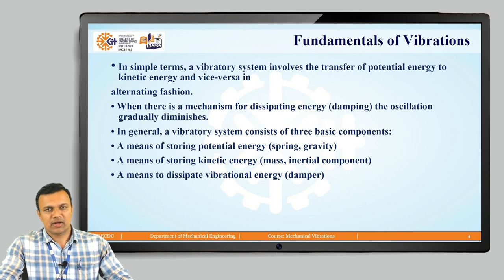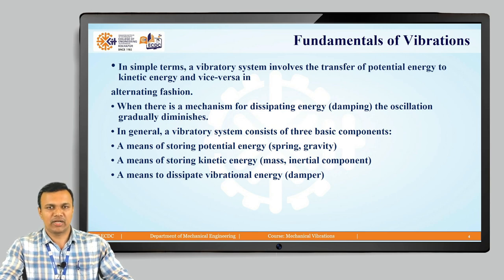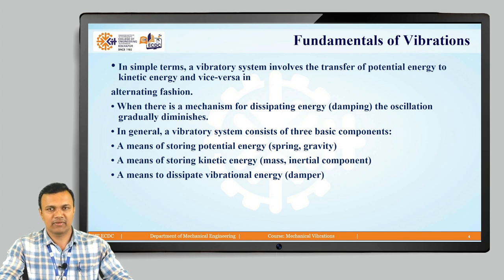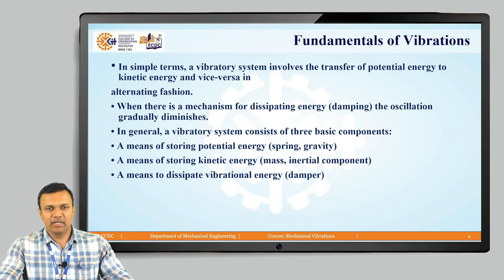In simple terms, a vibratory system involves the transfer of potential energy to kinetic energy and vice versa, alternating in fashion. If there is a mechanism that dissipates energy, complete conversion of potential energy to kinetic energy is not possible, and some energy is dissipated as heat. This is known as damping, and its effect is the gradual diminishing of vibration amplitude.